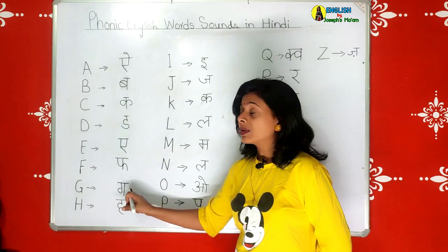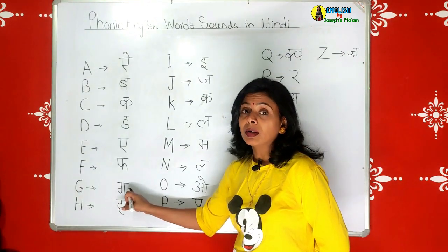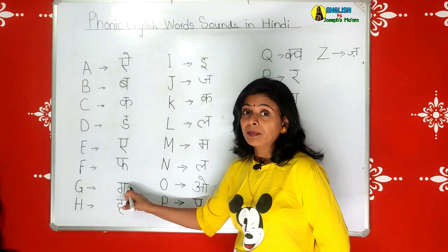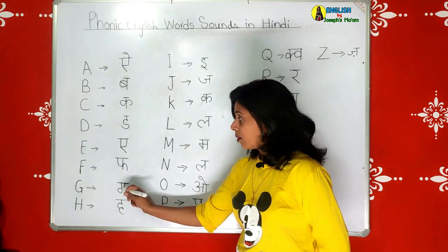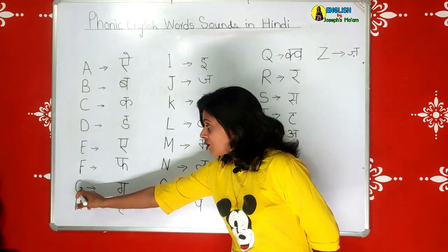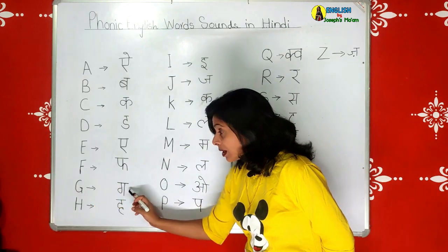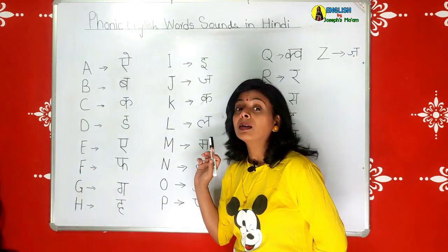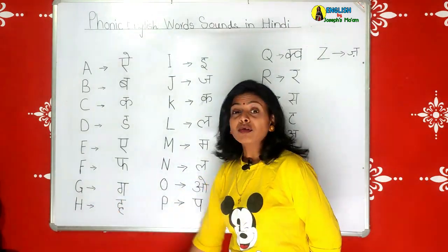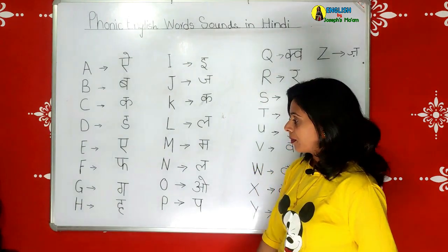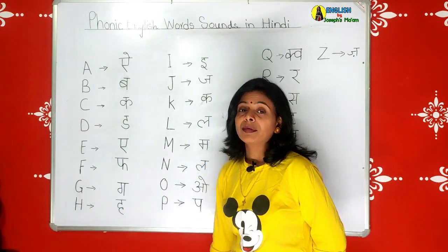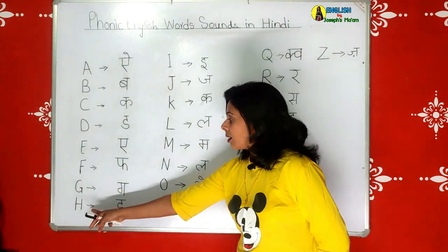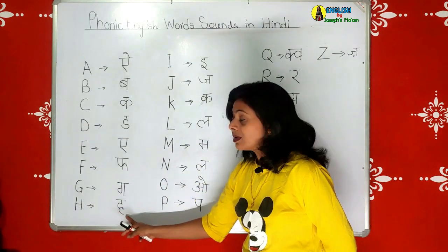G stands for grapes. In Hindi the phonic is 'guh' - grapes. Now we come to the next phonic, H. H is for hen. The Hindi phonic is 'ha' - hen.